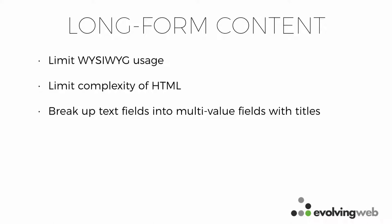That same technique — using Paragraphs for event date instances — could also be used for long-form text. If you have an article with different sections that you want to have a unique kind of display, you can create a paragraph type for an article section with a title and body. That might seem like overkill, but it means your presentation is going to be really consistent. All those titles are displayed the same way, and the designer can quickly change the font or display of titles without having to update all the content. Identifying those opportunities to make different types of fields is the job of the content strategist.